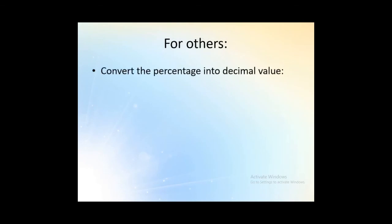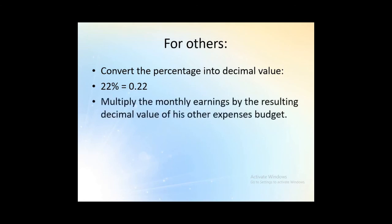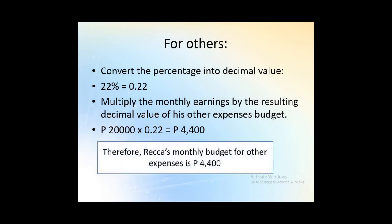For others, convert the percentage into decimal value. So 22%, that is 0.22, multiply the monthly earnings by the resulting decimal value of his other expenses budget. So that would be 20,000 pesos multiplied by 0.22, so that is 4,400 pesos. Therefore, RECA's monthly budget for other expenses is 4,400 pesos.